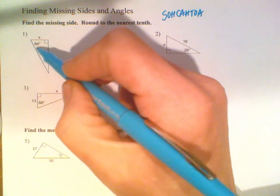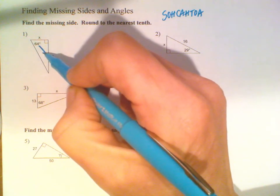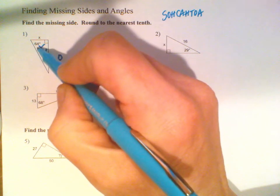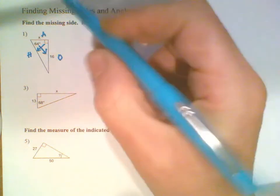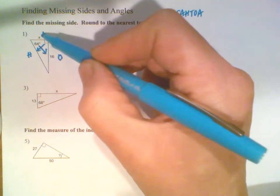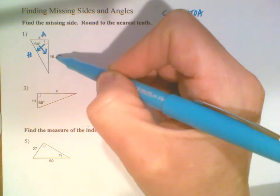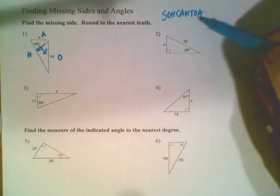In this first triangle, 64 degrees is given. Across from that angle is my opposite, across from the right angle is the hypotenuse, the remaining side is the adjacent. The adjacent and opposite are marked, so I use tangent.